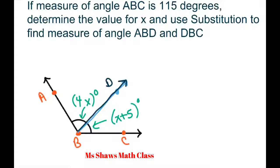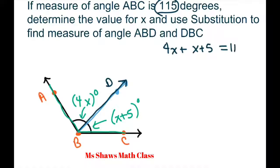If the measure of angle ABC — this whole thing — is 115 degrees, we're going to solve for x and use substitution to find the measure of angle ABD and angle DBC, these two separate angles. The first thing we're going to do is solve for x by adding 4x plus x plus 5, because all of this should equal 115 degrees.